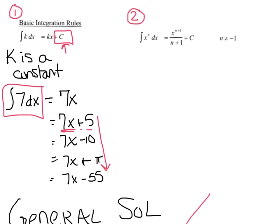Moving on to rule 2: the integral of x to the n dx is equal to x to the n plus 1, divided by n plus 1, plus c. When you take a derivative, you subtract 1 from your exponent. Now if you're going to integrate, you're going the other way — instead of subtracting 1, we're actually going to add 1.